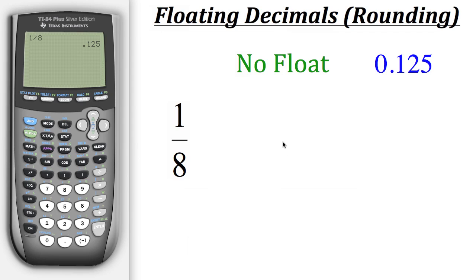When we change the float settings on our calculator, we're specifying how many decimal places we want in our answer. For example, if we change the setting to two, the calculator will always give us two decimal places, even if we don't need them. The same applies if we change the setting to five, six, or seven.